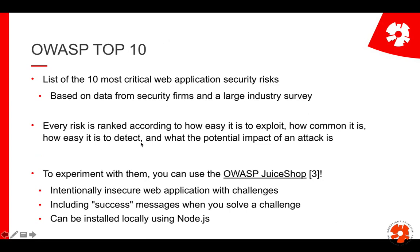The Top 10 list we look at also exists for mobile applications, but we look at the web list. It lists the most critical web application security risks. This is obtained from, for example, asking security firms and asking industry in general what kind of issues they have, how severe they are, and then they rank them by how easy it is to exploit a risk, how common they are, how easy they are to find, and what the impact is.